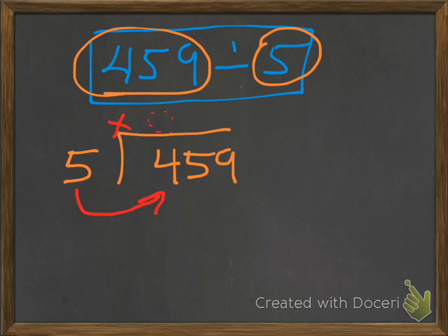So once again, we can kind of put a little imaginary 0 there. So now we have to look at the whole number, 45. 5 times 9 will get us 45.